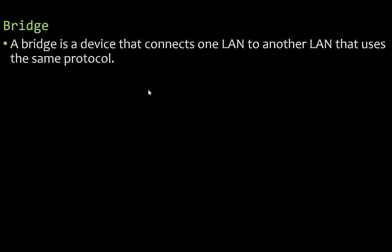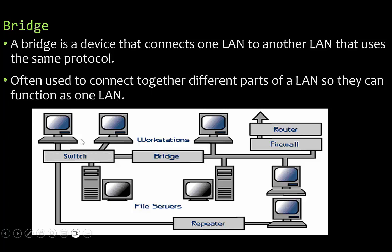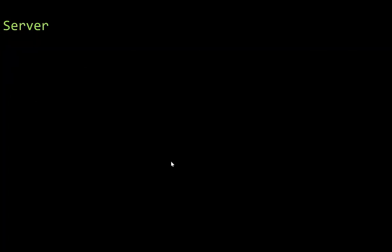A bridge is a device that connects one local area network to another using the same protocol. It's often used to connect different parts of a LAN so they can function as one network. For example, if you have one area with a switch and another with a repeater and router, a bridge connects these two different local area networks together so they can operate as one.